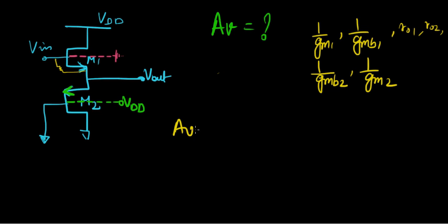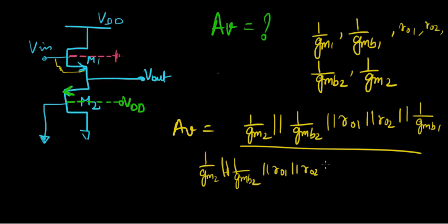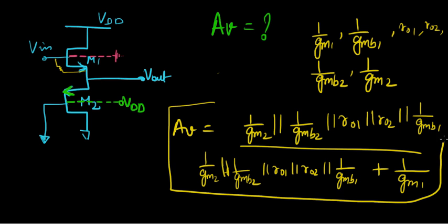Now what do we do? Except GM1, everything else we just list. So 1 over GM2 parallel with 1 over GMB2, parallel with RO1, parallel with RO2, parallel with 1 over GMB1, plus 1 over GM1. That's all. Isn't this super simple? I'm just amazed at the simplicity of this thing.